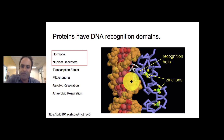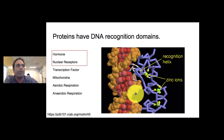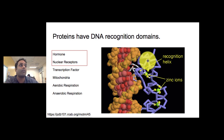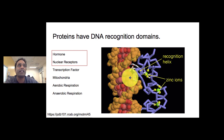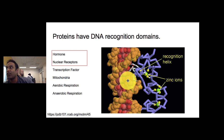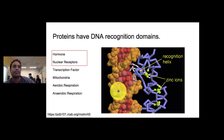Zinc fingers are parts of proteins that are specific to sequences of DNA — put two or three zinc fingers together and they will bind to a fairly unique section of DNA. What's cool is that proteins can bind specifically to a sequence of DNA without pulling apart the DNA to read individual bases; instead, the protein reads the open face of DNA and recognizes the sequence that way.